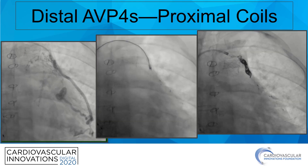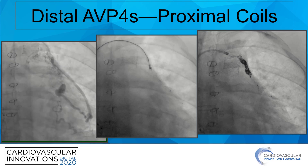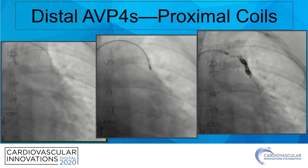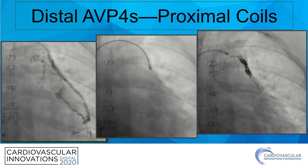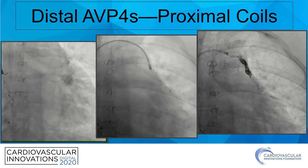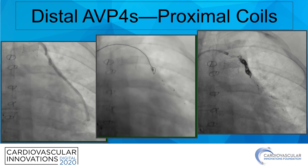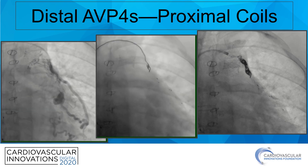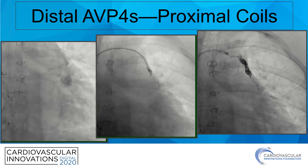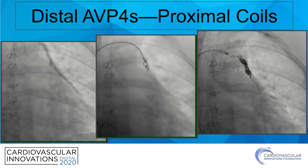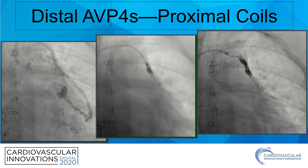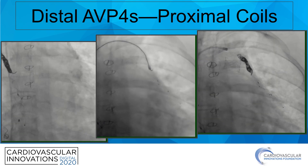This collateral was a more straightforward vessel, but because there were feeder branches originating very proximally, I wanted to pack in a good amount of coils to ensure adequate coverage. I started by laying down distal AVP-4s and then packing 0.035 inch coils proximal to that. The second image shows delivery of basic pushable coils, with the final image demonstrating complete cessation of flow.